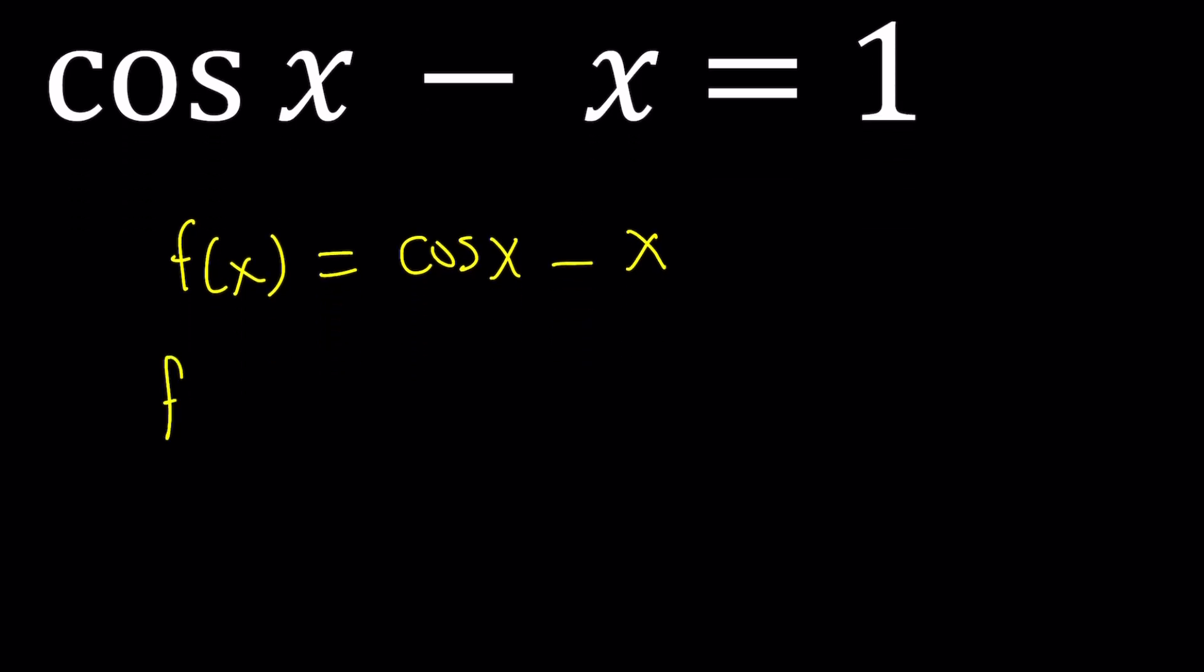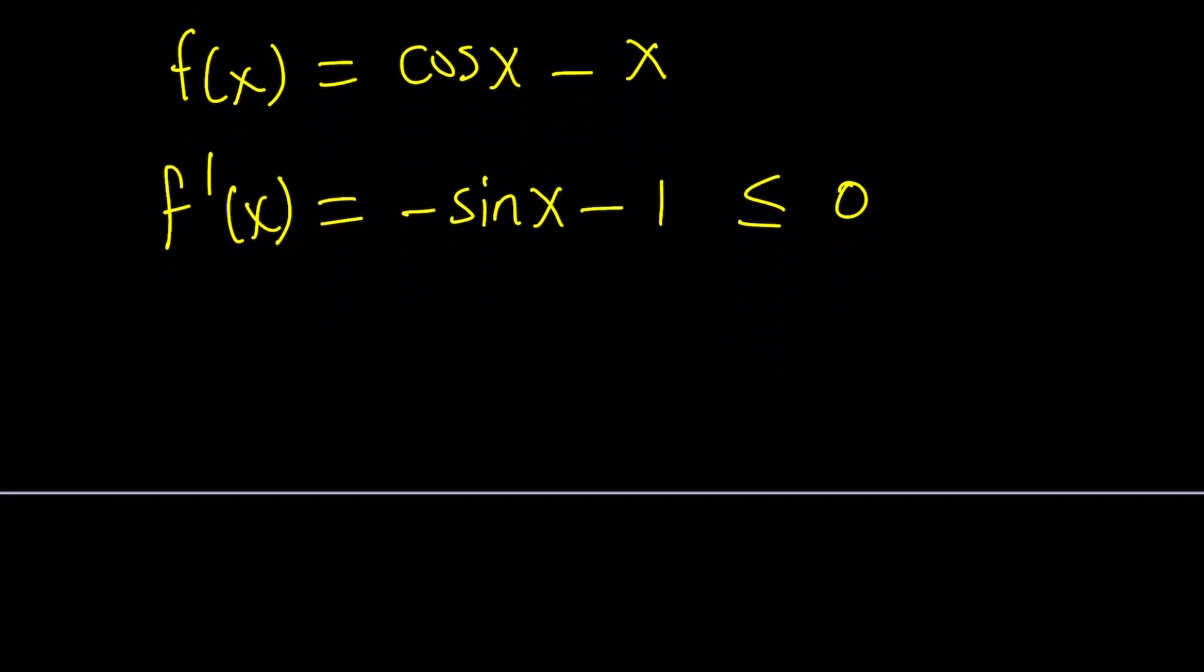So I'm going to differentiate this expression. Derivative of cosine is negative sine and the derivative of x is 1. So this is the derivative and I claim that this is always negative or less than or equal to 0. Now why am I doing that? That could kind of look meaningless to you at this point. But here's the thing.